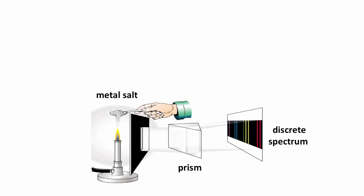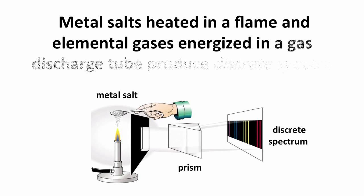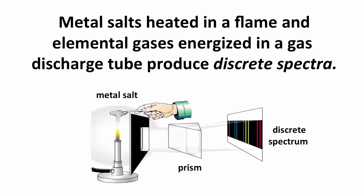But if instead we use a metal salt, so sodium chloride or potassium chloride, or some sort of salt containing a metal, and sprinkle that into a Bunsen burner flame, we see some pretty colors being produced, and then if we look at the spectrum, we get a discrete spectrum.